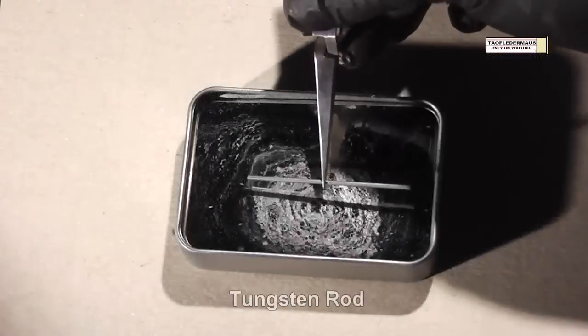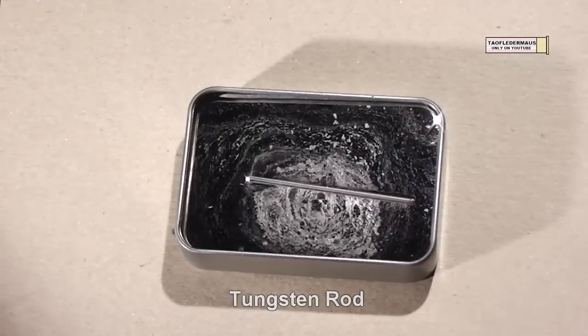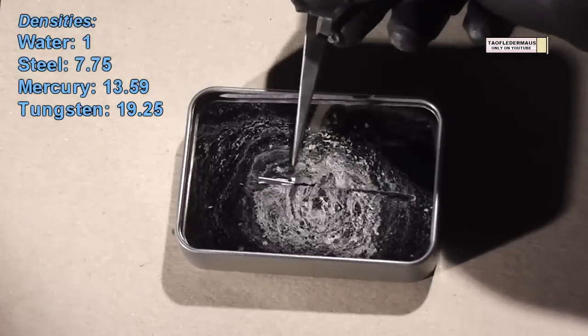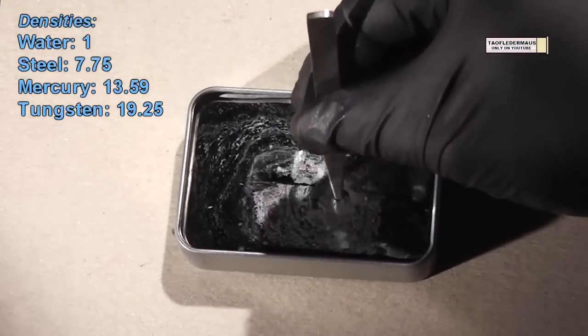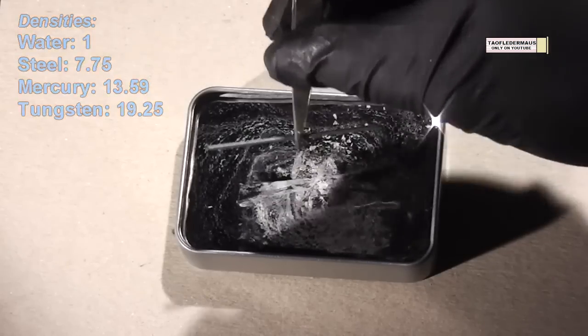Now we'll add a tungsten rod because tungsten is denser than mercury, but we can have the same phenomenon going on with the paper clips in the water. You can see how resistant that tungsten rod is to sinking. But we can make it sink.